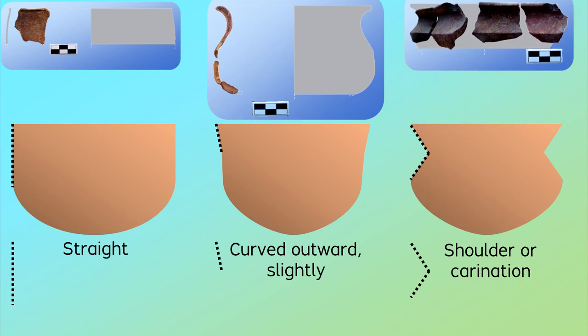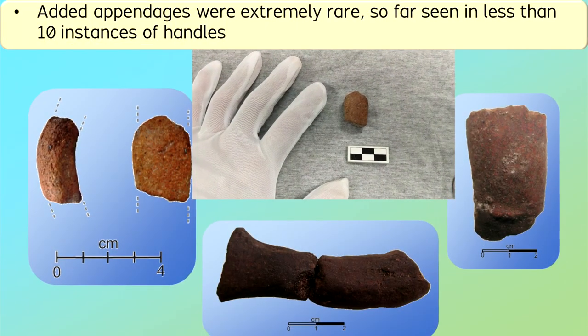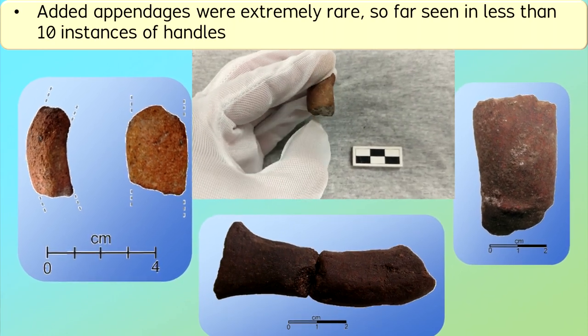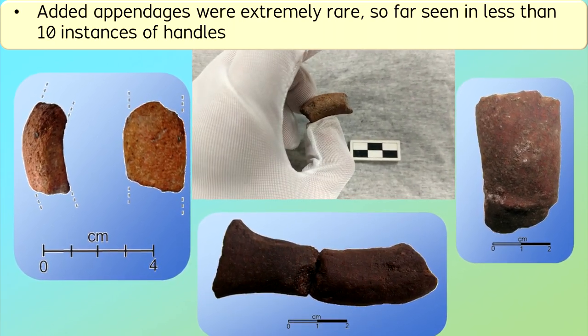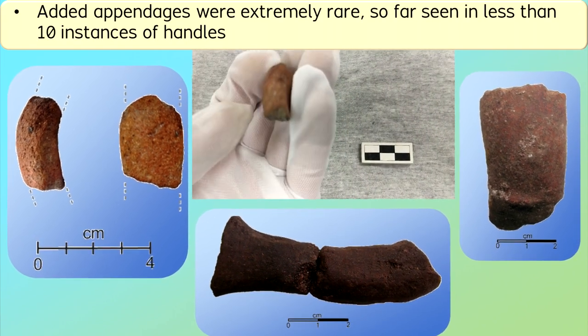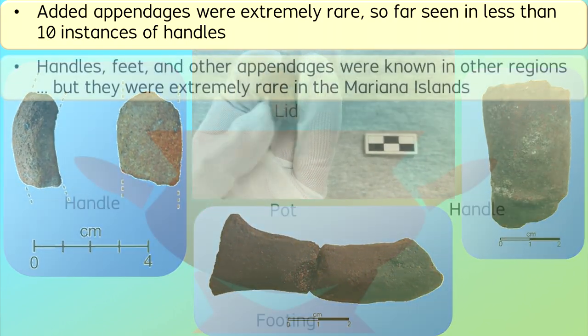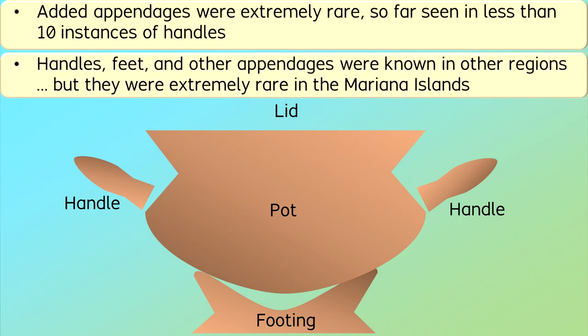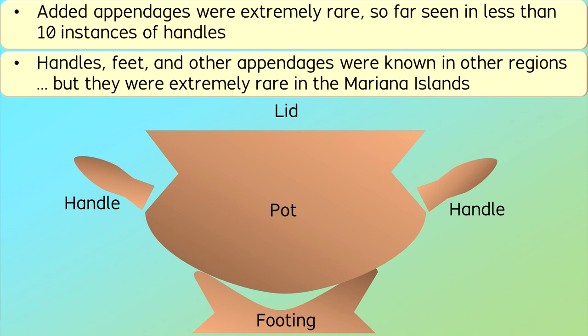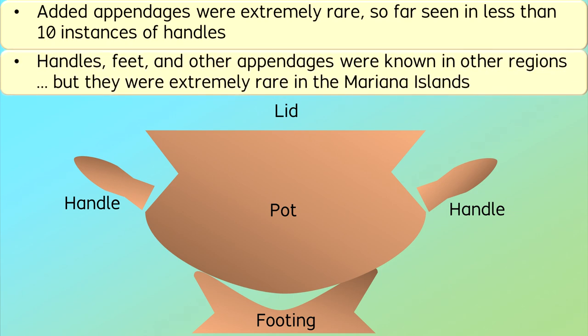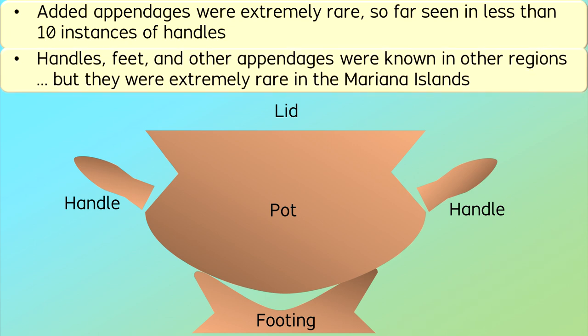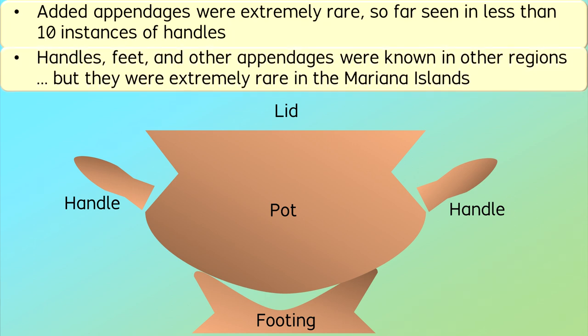Added appendages were extremely rare, seen in fewer than 10 instances of pottery handles during this earliest period. In other regions, such as in East Asia or Southeast Asia at the same time, and in fact earlier, people had created many forms of handles, lids, and footing pieces. The earliest pottery artisans in the Mariana Islands probably knew about these techniques and traditions, but evidently they produced simple bowls without these appendages except for the extremely rare instances of handles.